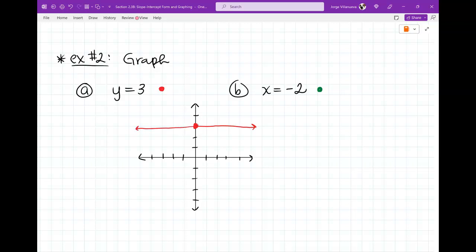The next one. X equals negative 2 is a vertical line on the x-axis at negative 2. So I'm going to go to negative 2 and put a dot right there. And then, just draw a vertical line. And that's it. That's how you do those. So that's what your homework is based on.